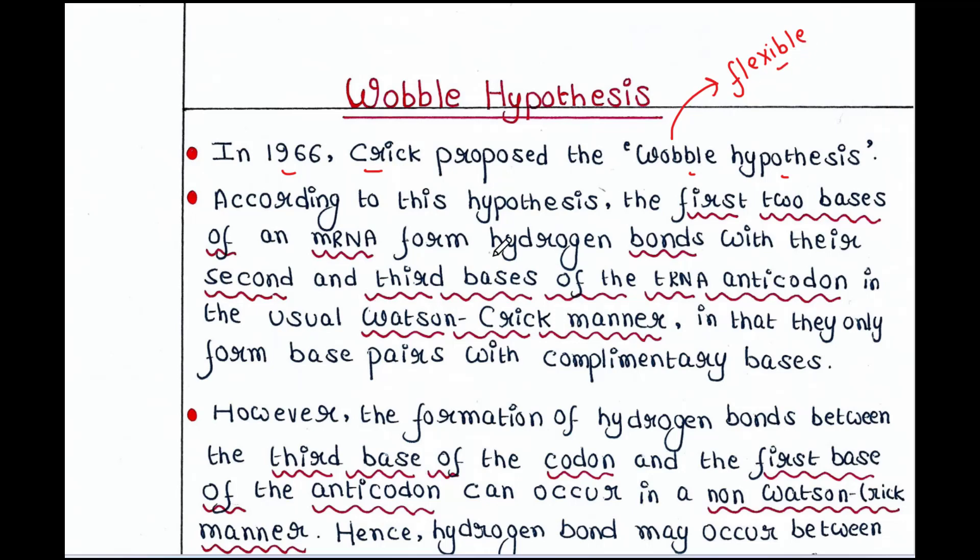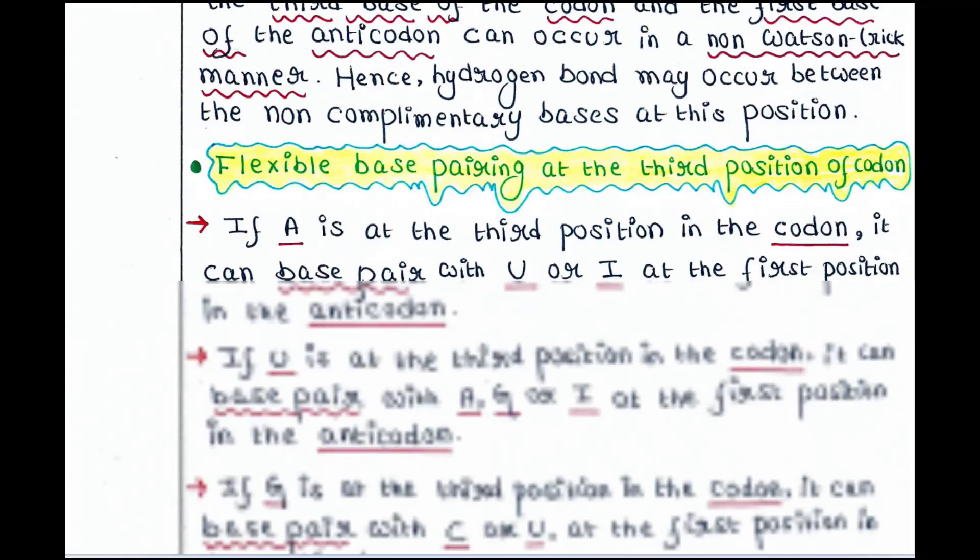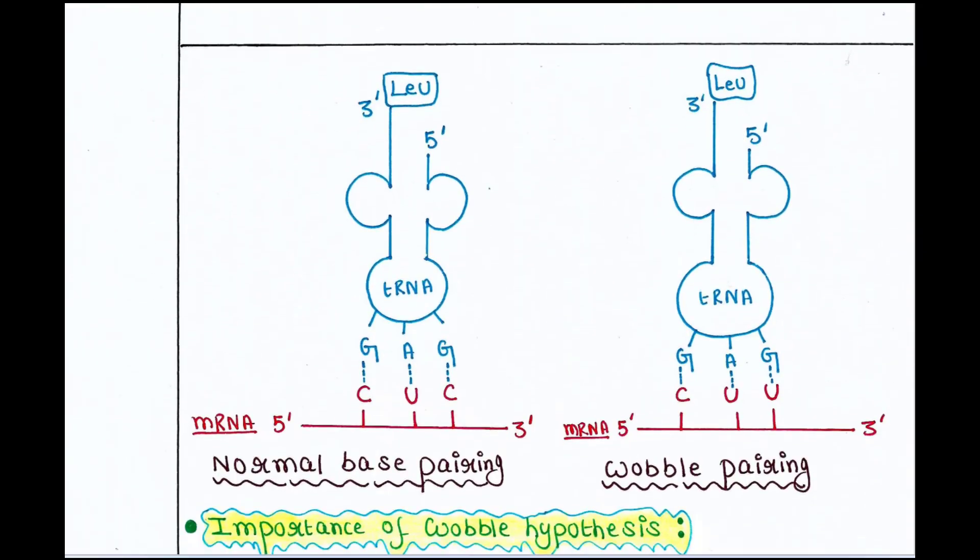Now according to this hypothesis, the first two bases of an mRNA form hydrogen bonds with their second and third bases of the tRNA anticodon in the usual Watson-Crick manner. In that, they only form base pairs with complementary bases.